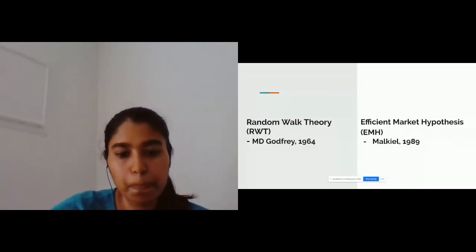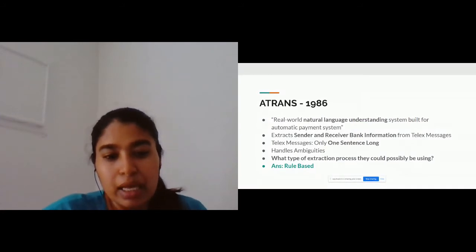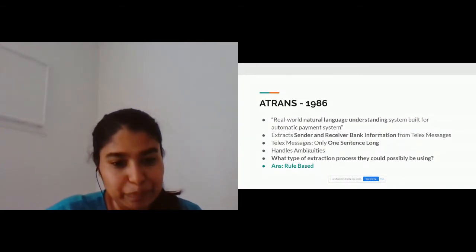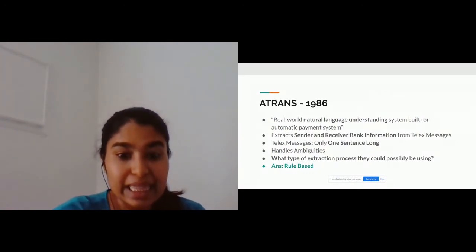Around the same time this theory came, a new model was also introduced called ATRANS, short for Automatic Fund Transfer Telex Reader. It was proposed to be a real-world natural understanding system, and the work of this model was just to extract sender and receiver bank information from telex messages. Let me tell you, these messages were one sentence long at max, and this model was made for a very restricted domain of international bank transfer.